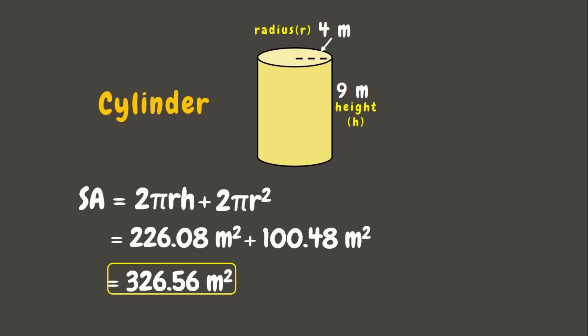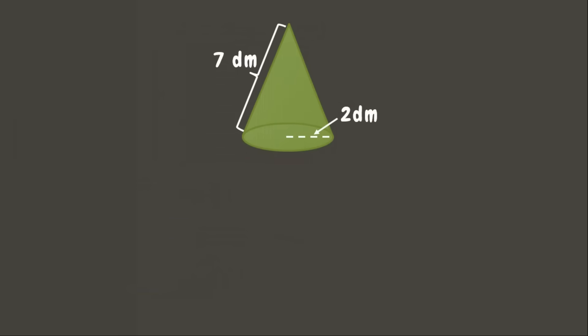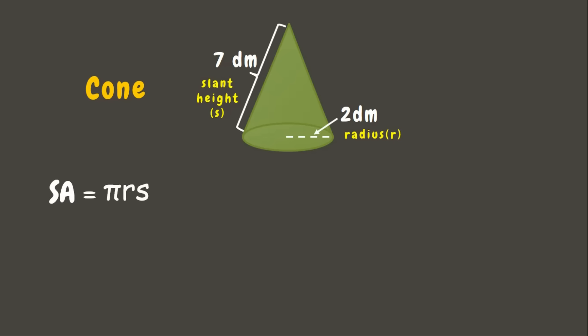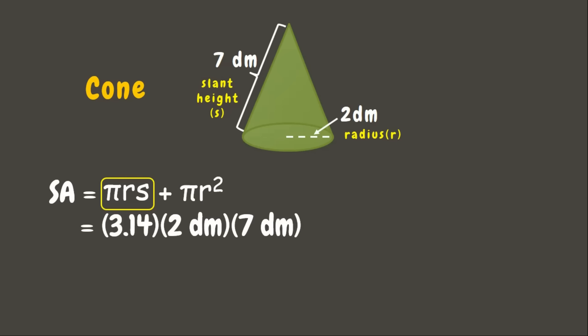Now let's look at a cone whose slant height measures 7 decimeters and the radius is 2 decimeters. To solve for the surface area of a cone, we use the formula: πrs plus πr squared. First, let us solve πrs — that will be pi (3.14) times the radius (2 decimeters) times the slant height (7 decimeters).